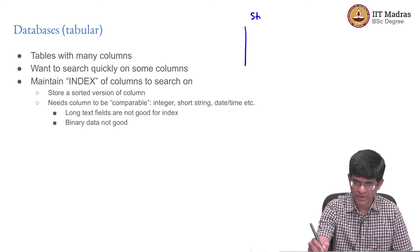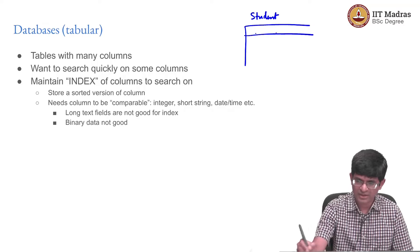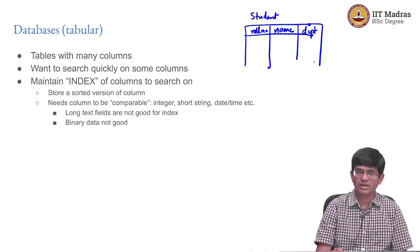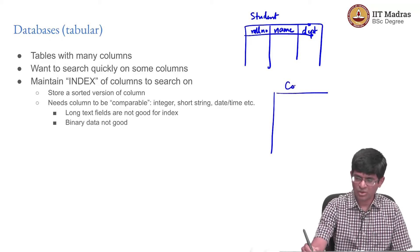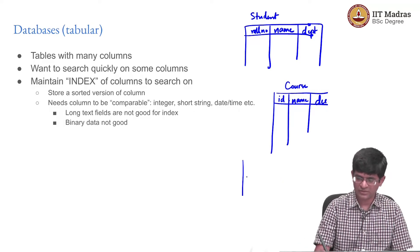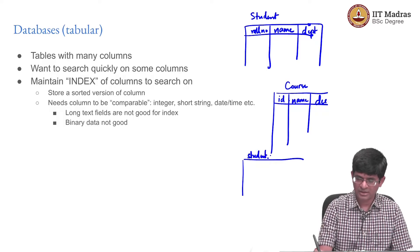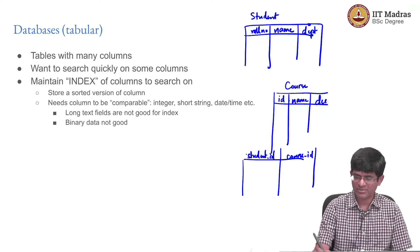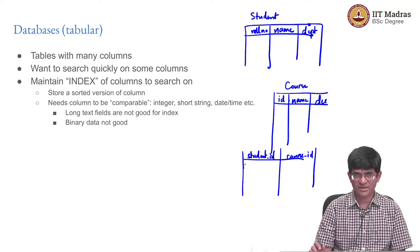For example, I might have something called a student table where, as you can imagine, it would have a roll number, a name, probably a department, and so on. And I might have another course table which has an ID number for the course, a name, a description. And then I could also have a sort of combined table where I have a student ID and a course ID, which basically tells me which student is registered for which course.